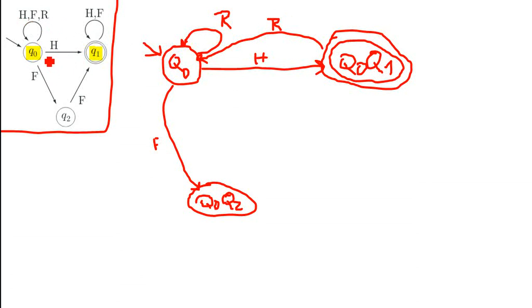Next, what happens if we have the input H? We have to check all the arrows with the H. We have an H here, we have an H here, and we have an H here. The next states where the arrows are pointing are state Q0, Q1. So when we get the input H, we just get back to our state here.